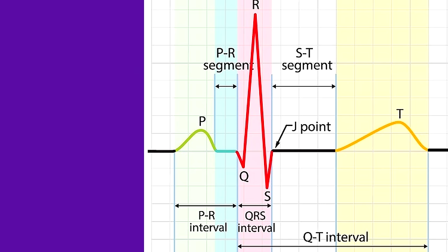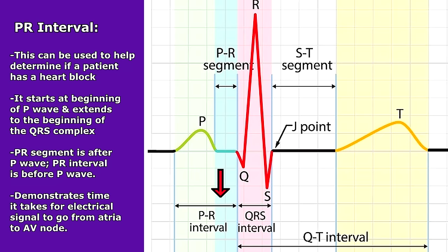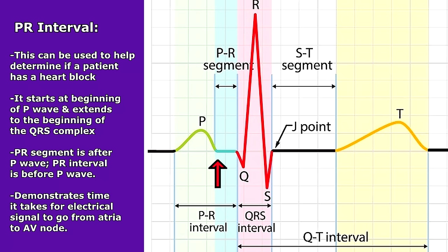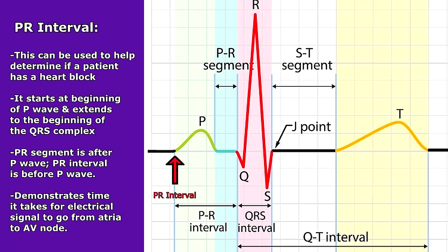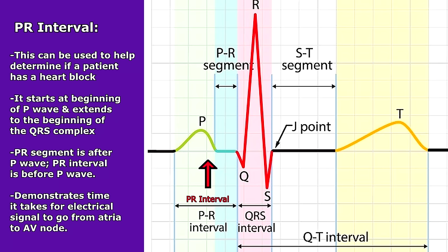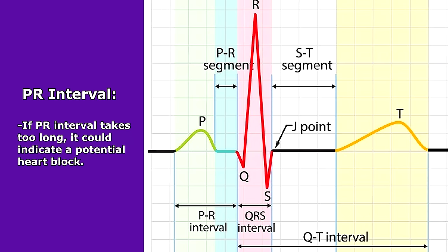Also found in this area is the PR interval, which is very important in determining if your patient has a heart block. The PR interval starts at the beginning of the P wave and extends to the beginning of the QRS complex - so it's different from the PR segment. The PR interval demonstrates the amount of time it takes for the electrical signal to go from the atria to the AV node. If it's taking too long, if we have a long PR interval, this could indicate a heart block.